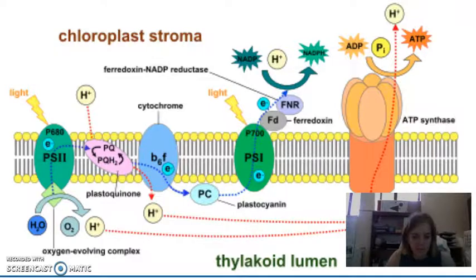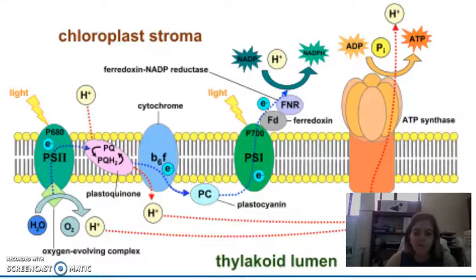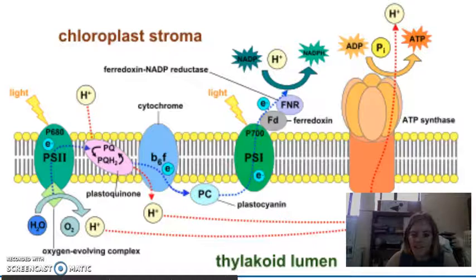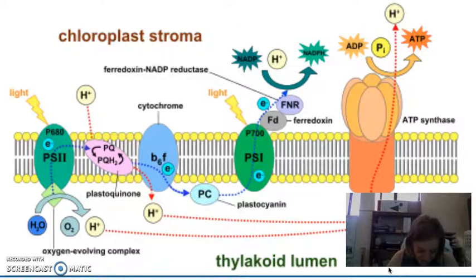Very similar to what happens in cellular respiration, those protons build up a strong positive charge in the lumen, and that strong positive charge eventually forms a proton gradient. That proton gradient is used to power the enzyme ATP synthase. In the thylakoid, ATP synthase works like a rotor that turns and turns and synthesizes ATP from ADP and inorganic phosphate, creating ATP. So we have another form of energy that is also going to move on to the next cycle.